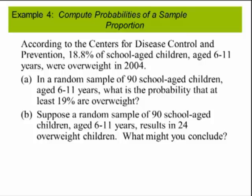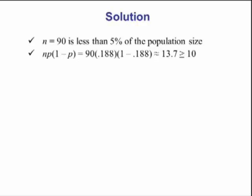Let's do an example. According to the Centers for Disease Control and Prevention, 18.8% of school-aged children aged 6-11 years are overweight in 2004. Part A: In a random sample of 90 school-aged children aged 6-11, what is the probability that at least 19 are overweight? We first have to check our requirements. 90 is less than 5% of the population size for school-aged children aged 6-11. N times p times 1 minus p would be 90 times 0.188 times 1 minus 0.188, which yields 13.7, which is greater than or equal to 10. So our requirements have been satisfied.